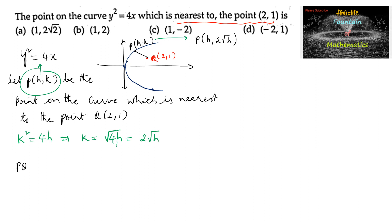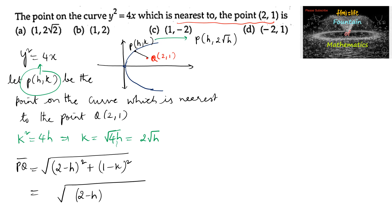Now let us find the distance PQ using the formula √[(x₂ - x₁)² + (y₂ - y₁)²]. So PQ = √[(2 - h)² + (1 - 2√h)²]. Let α² = (2 - h)² + (1 - 2√h)², so α = PQ.